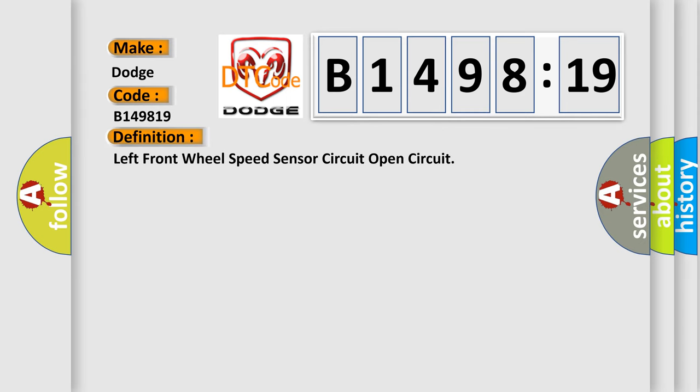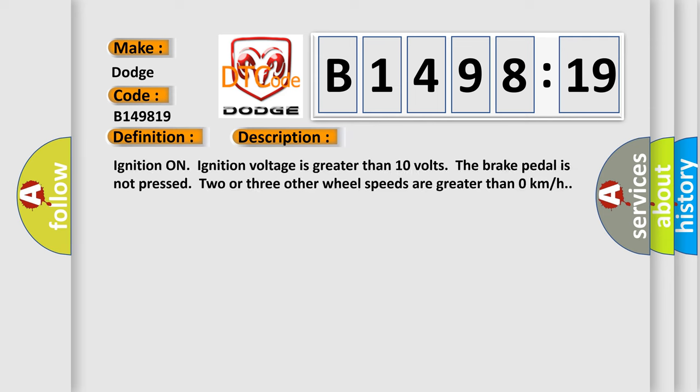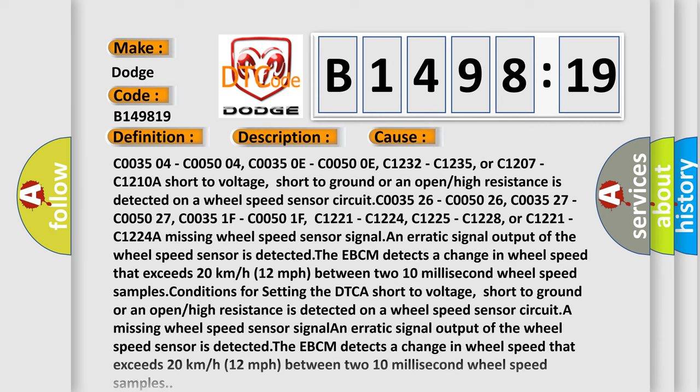The basic definition is Left front wheel speed sensor circuit open circuit. And now this is a short description of this DTC code. Ignition on, ignition voltage is greater than 10 volts, the brake pedal is not pressed, two or three other wheel speeds are greater than zero kilometers per hour. This diagnostic error occurs most often in these cases.